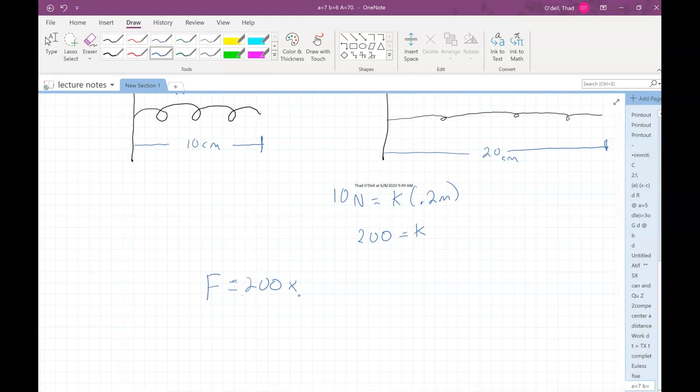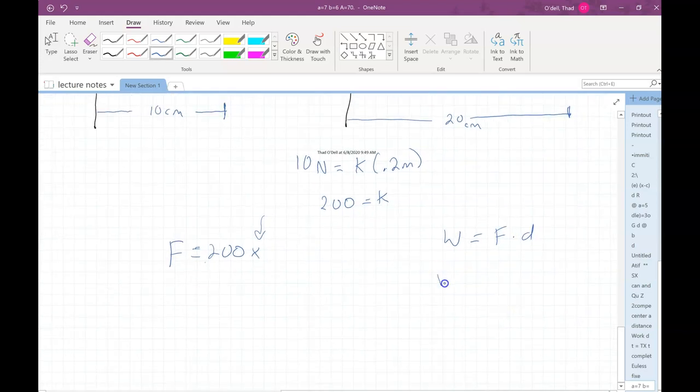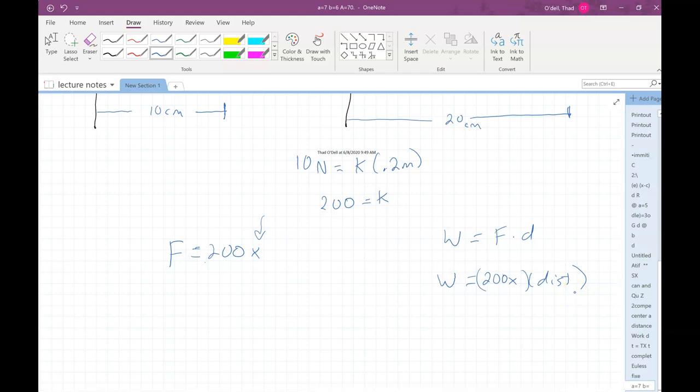So you can see these problems are a little bit confusing because there's really two distances. There's the distance that's involved in my displacement in calculating the force, but there's also a distance that's involved with the normal work formula, right? Because the work formula is force times distance. So the way the spring works, the work is going to be force, which is 200 times displacement, times the distance. So there's a point of confusion possibly of what distance is what.